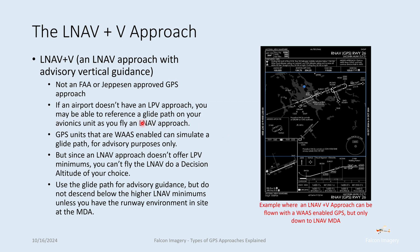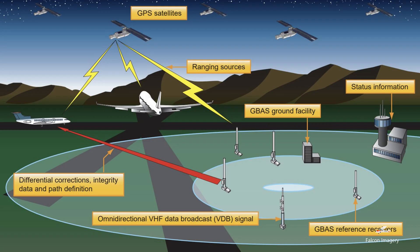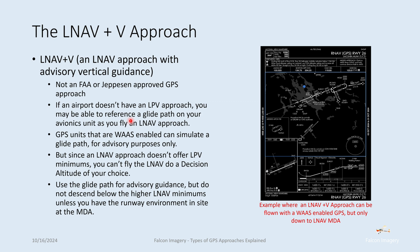WAAS allows for more precision in the GPS information provided to the pilot and the aircraft. It involves receiving GPS satellite signals, getting error correction information, sending that down to ground-based systems, and those ground-based systems sending error code information back up to the GPS receivers in the aircraft, which then use those error codes to give you more precision on your GPS system. Not all GPS units have WAAS-enabled features.